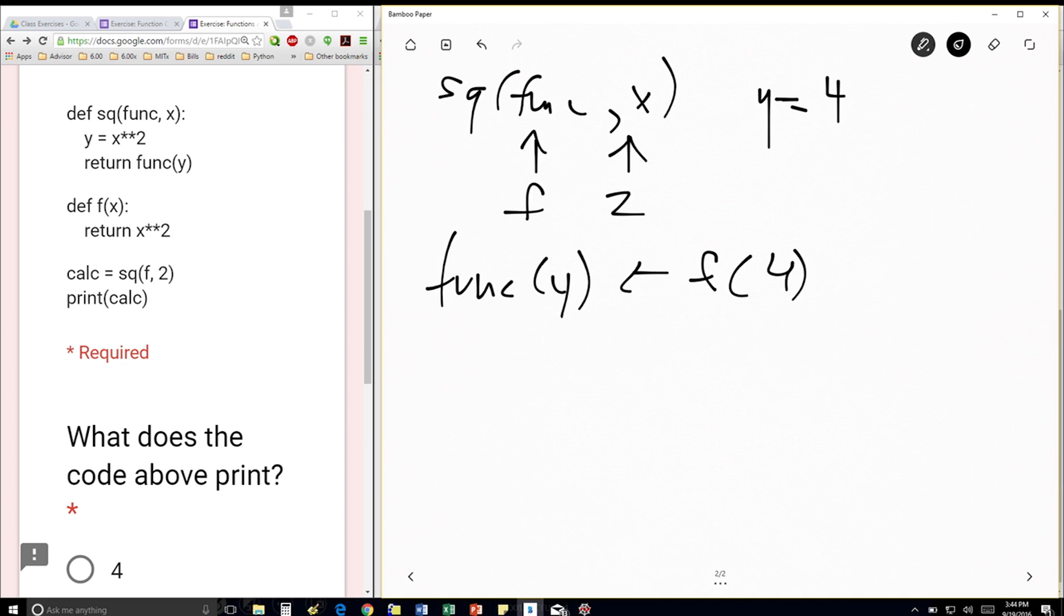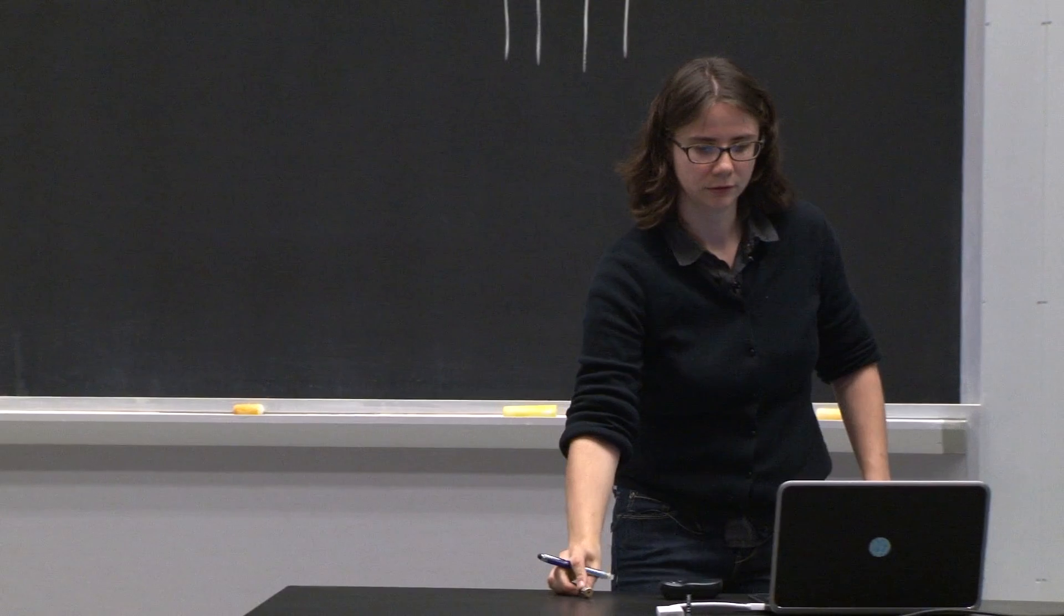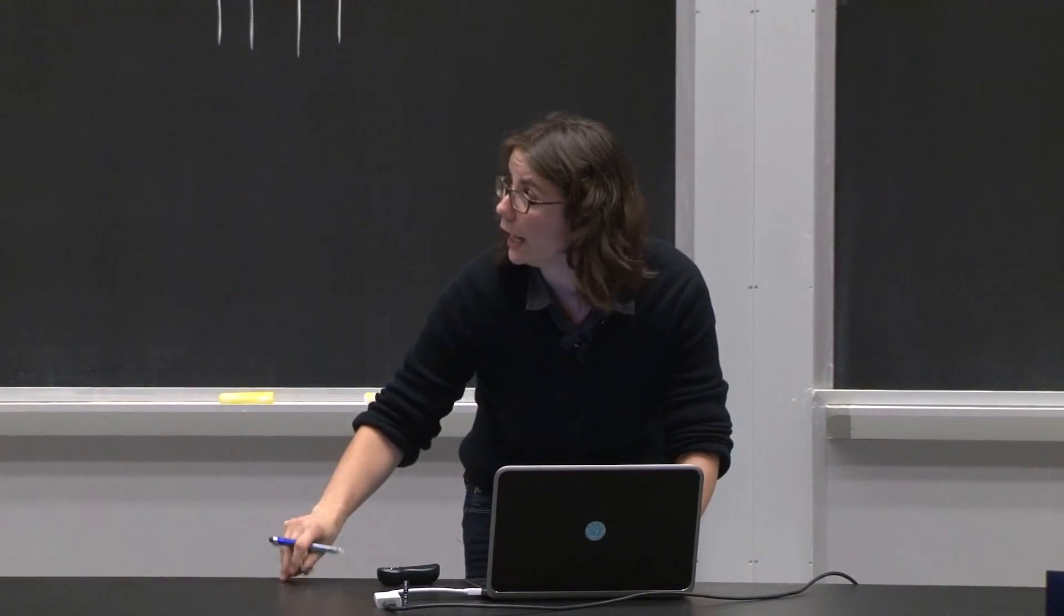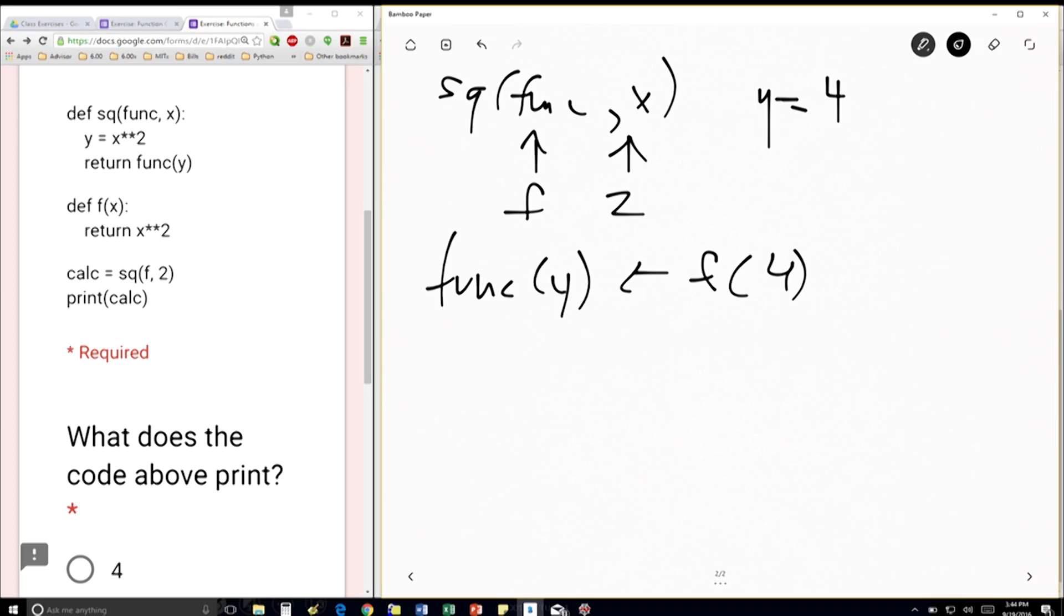So now this is another function call. We know what f is. Python, this program knows what f is. f is going to be this part right here, which returns x squared.